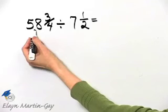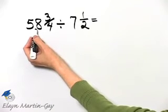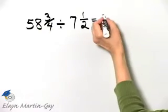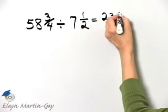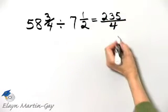We'll multiply four times fifty-eight, and that's two-hundred-thirty-two, plus three, that's two-hundred-thirty-five, over the original denominator of four.